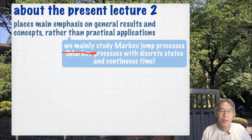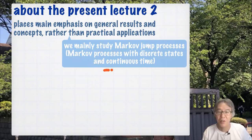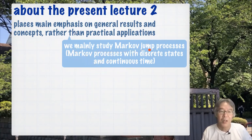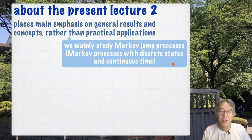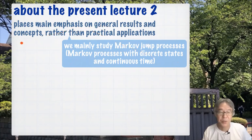Typically we mainly study a mathematical formulation called Markov jump processes — that is, Markov processes with discrete states and continuous time. Of course I will explain them very carefully. This is a rather mathematically precise setting, so it could be a toy model from a physics point of view, but I think this is a very good playground for learning general results and concepts.